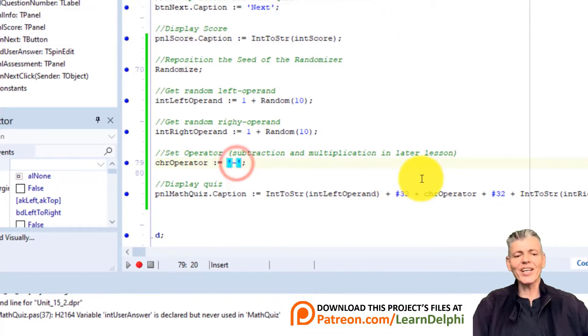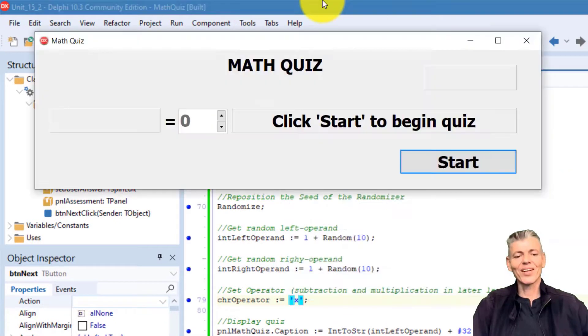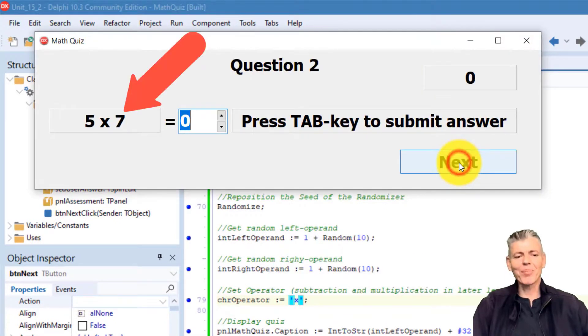Change the minus to an x. Run the project. Click start. Now we get multiplications. Close the form.